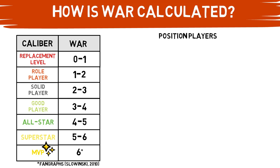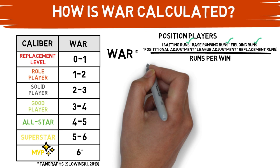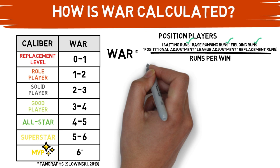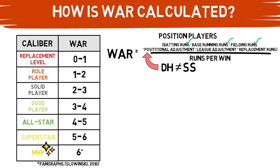Now let's get into the equation. For position players, WAR is calculated using an overly simplified equation covering batting runs, baserunning runs, and fielding runs. But it also includes a positional adjustment — a constant that accounts for the difficulty of that position — since a replacement level player differs by position. Replacing a star shortstop is harder than replacing a DH. There's also a league adjustment for the difficulty of that year's league, and a replacement runs figure to calibrate the scale. Divide everything by total runs per win and you get that player's WAR.